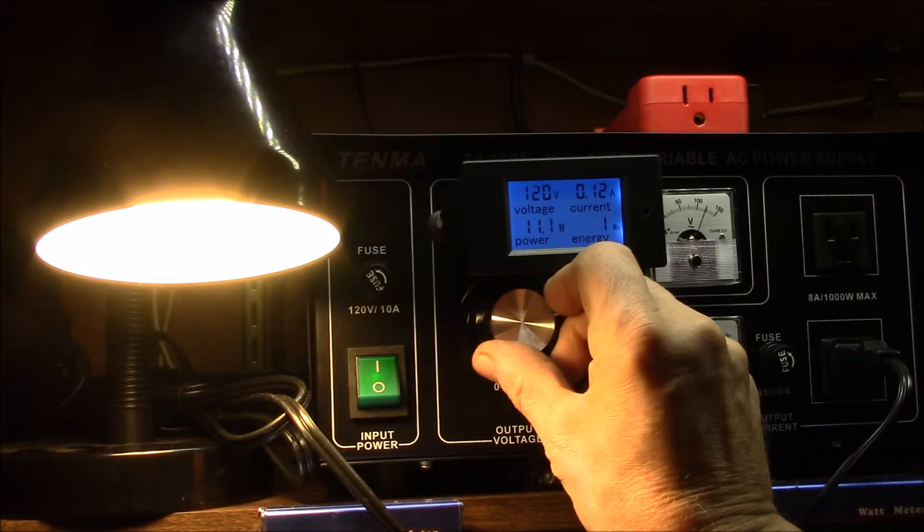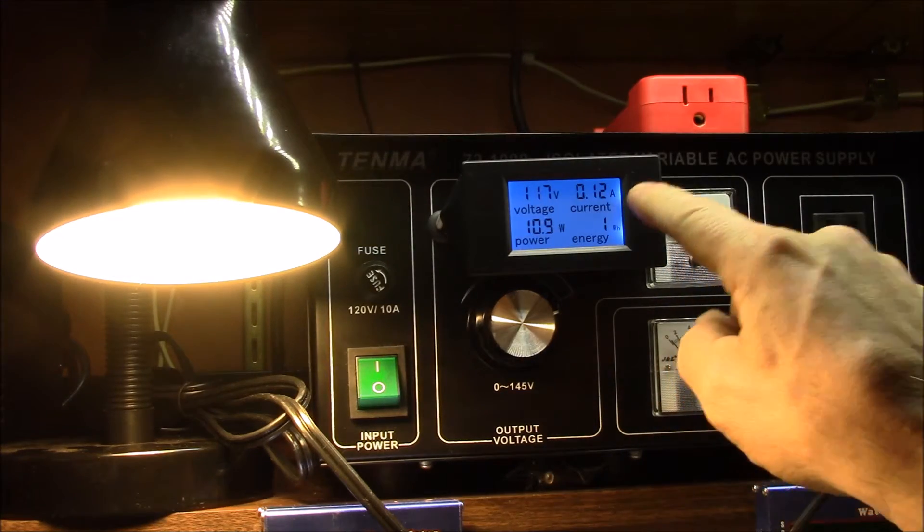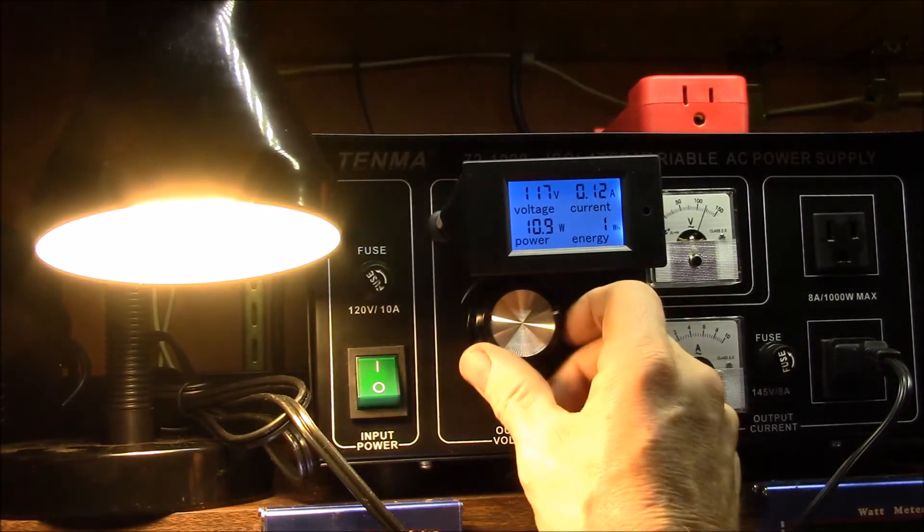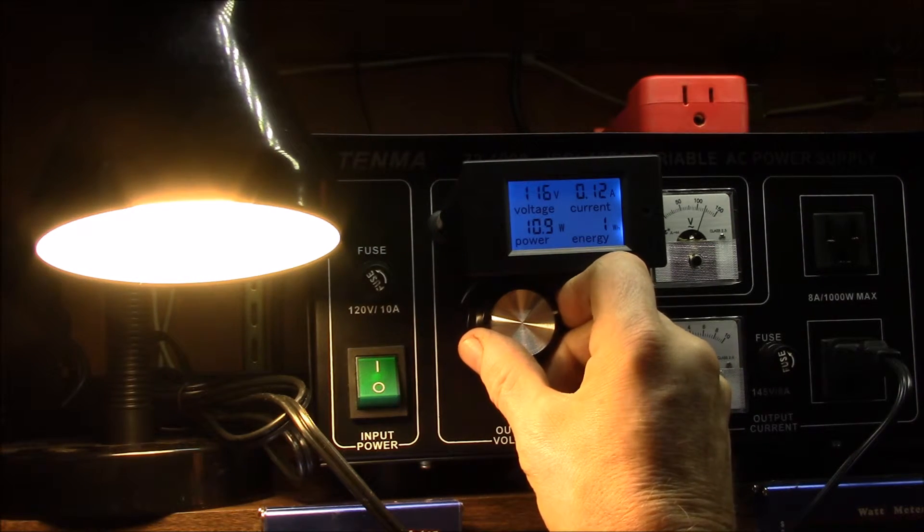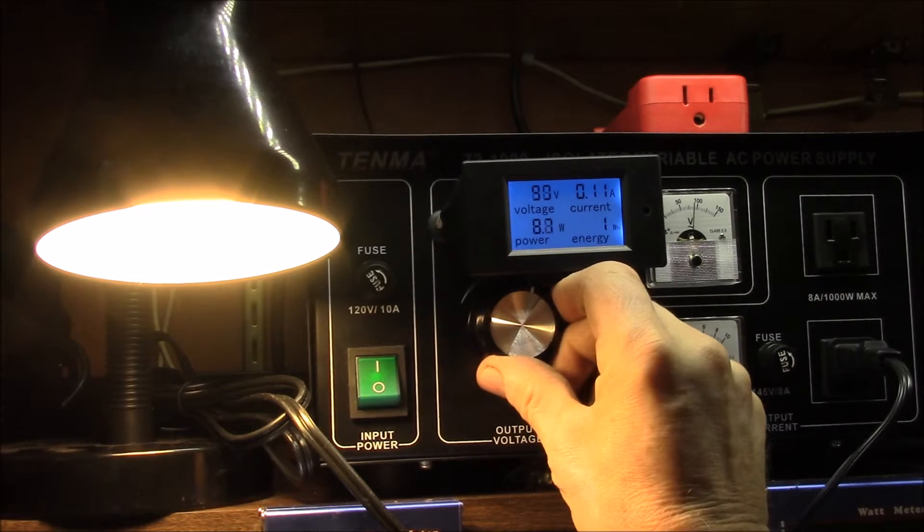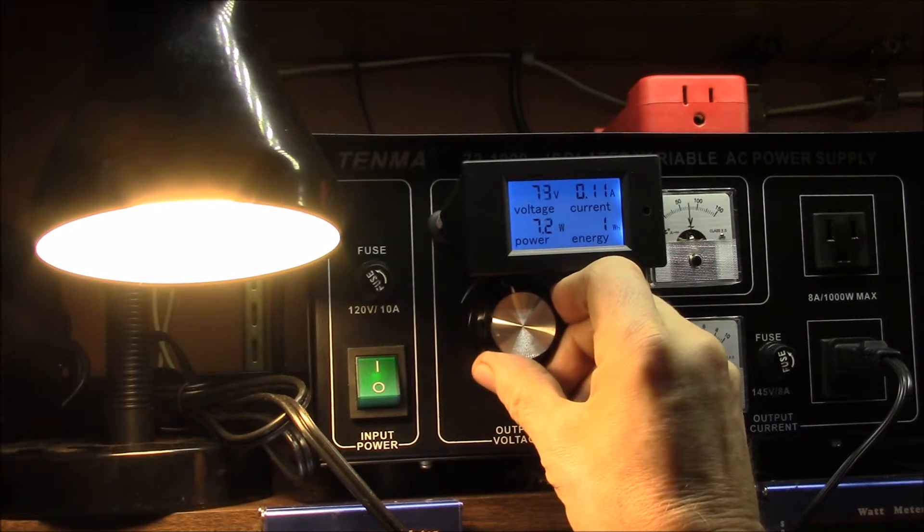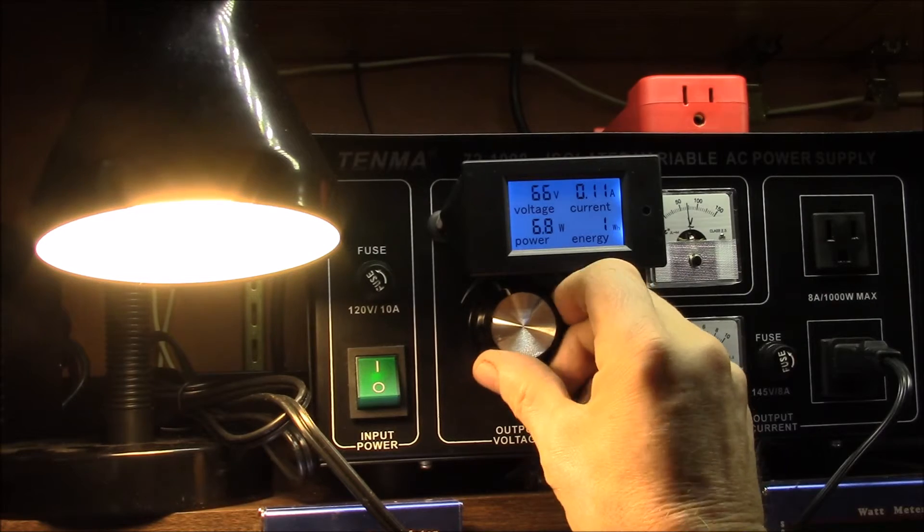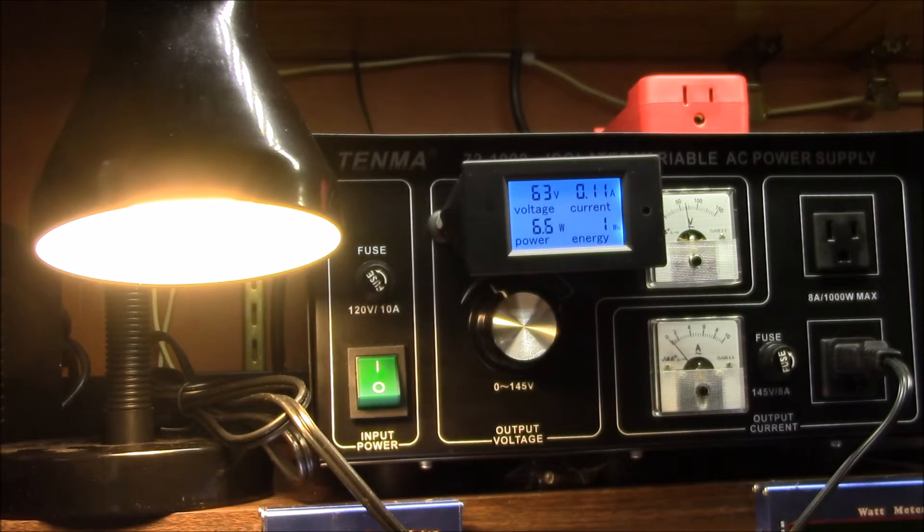Now watch as I reduce the voltage here, the current rises a little bit. And then it stays pretty constant. In fact, it stays very constant. You notice the voltage has reduced, the current rose just a little to around 95 milliamps. And the power started falling off in proportion to the voltage. So this is a signature of the active dimming control circuit of the bulb operating.